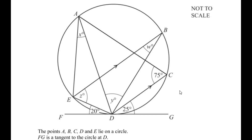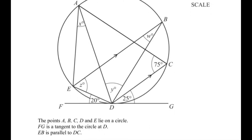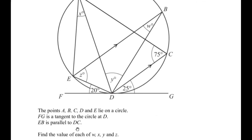Hello and welcome to my channel. In this video we are going to solve an example from circle theorems. The points A, B, C, D and E lie on a circle. FG is a tangent to the circle at point D and EB is parallel to DC. Find the value of each of W, X, Y and Z.